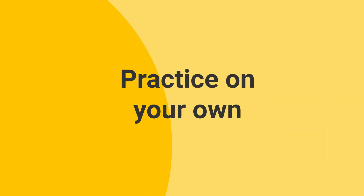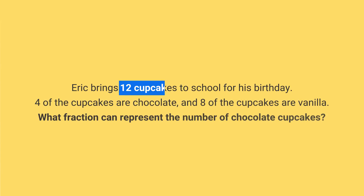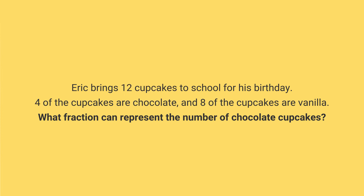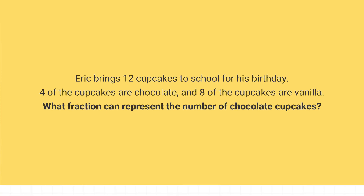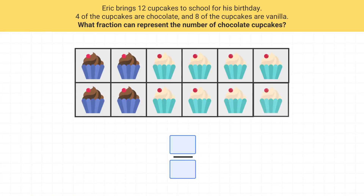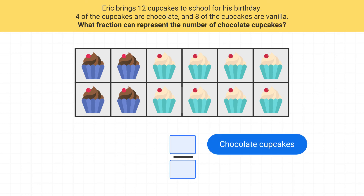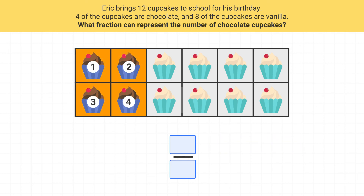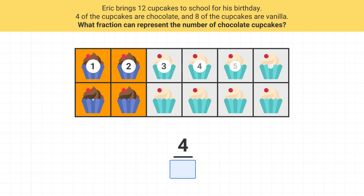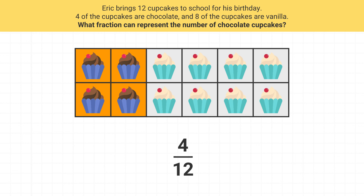Now it's time for you to practice on your own. Eric brings 12 cupcakes to school for his birthday. Four of the cupcakes are chocolate and eight of the cupcakes are vanilla. What fraction can represent the number of chocolate cupcakes? We're looking for chocolate cupcakes, so our numerator will be the number of chocolate cupcakes. We have four chocolate cupcakes, so our numerator is four. The denominator of the fraction will be the total number of cupcakes. Eric brings a total of 12, so our denominator is 12. Four twelfths of the cupcakes are chocolate.